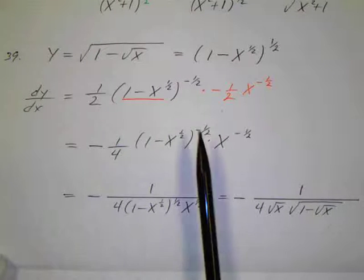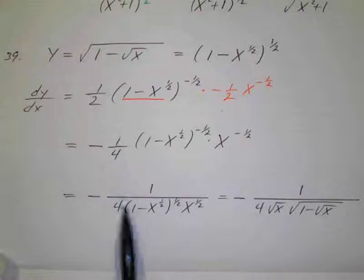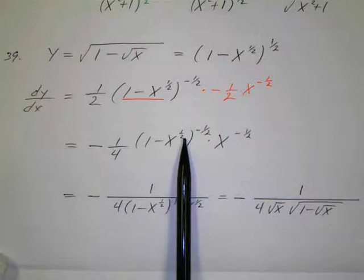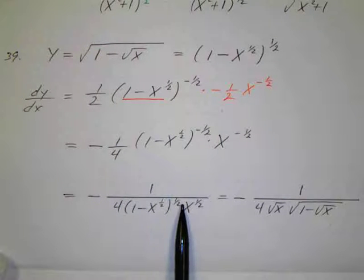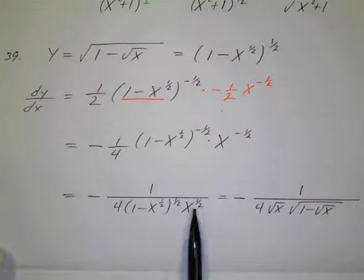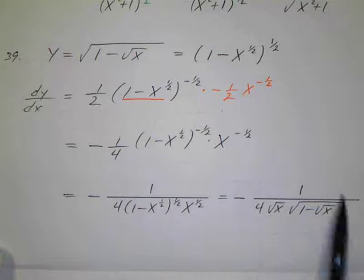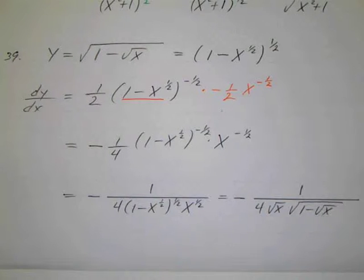But we could simplify more — put everything on the bottom to make positive exponents, so negative 1 over 4, and 1 minus x to the 1 half to the 1 half power positive, and x to the 1 half power. Then writing everything back into radical form: this is the square root of x, so I've got 4 times the square root of x, and then the square root of 1 minus the square root of x. So you can see it in this form also. Try to be aware of what they might do with you algebraically.